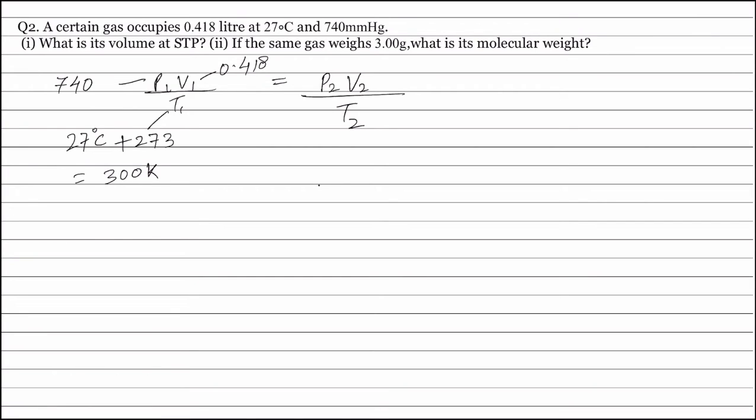P2 and T2 are standard pressure and temperature and V2 is the volume occupied at this standard pressure and temperature. Standard pressure is 760 millimetres of mercury and standard temperature is 273 kelvin.